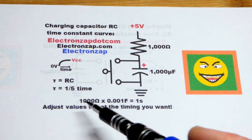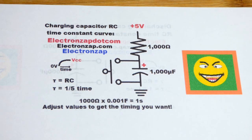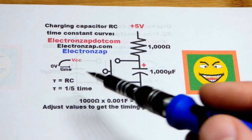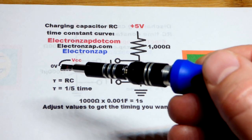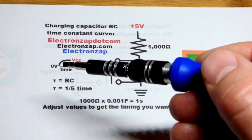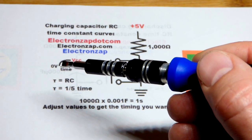So that's one time constant, that's the first fifth of the charging where you can see there's a rapid voltage rise, about two thirds of the total voltage change.